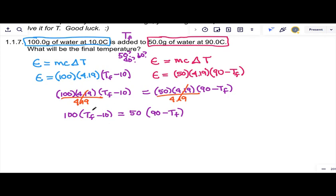If I distribute the hundred through here, I get 100 T final minus a thousand, and on the right I get 50 times 90 is 4,500 minus 50 T final.